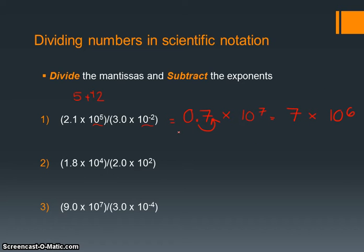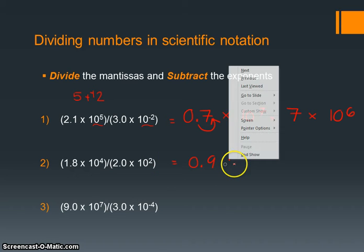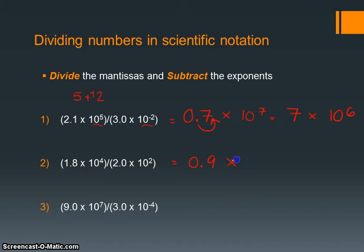If I look over here, I've got 1.8 times 10 to the 4th divided by 2 times 10 to the 2nd. 1.8 divided by 2 gives 0.9 for the mantissa. Then 10 to the 4th minus 10 to the 2nd gives 0.9 times 10 to the 2nd.